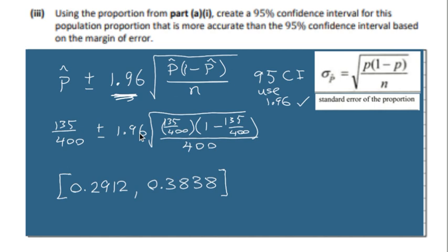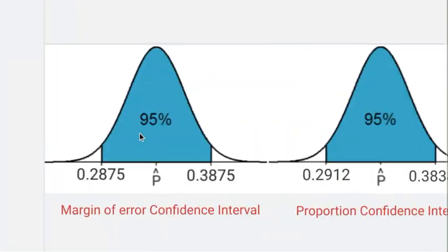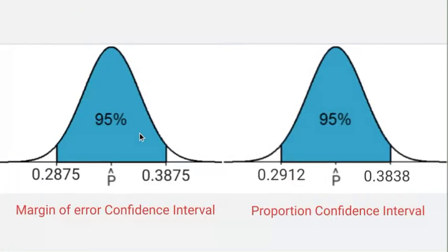The interval has narrowed and it's a little bit different, a slight percentage difference. Let's look at how they compare. There's 0.2875 for the lower limit over here and 0.2912, and for the higher limit 0.3875 and 0.3838. So the proportional confidence interval has shrunk very, very, very marginally.